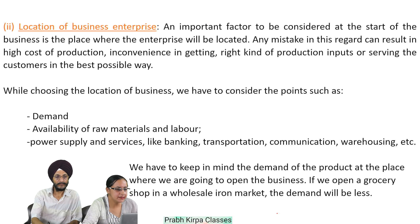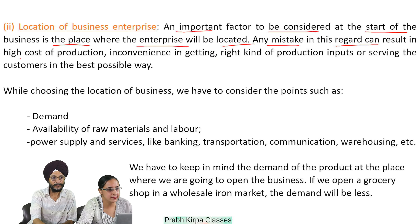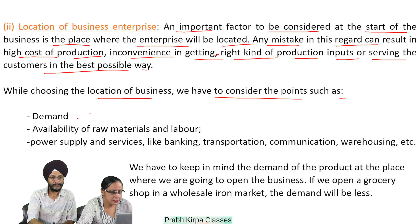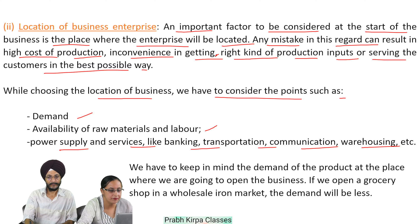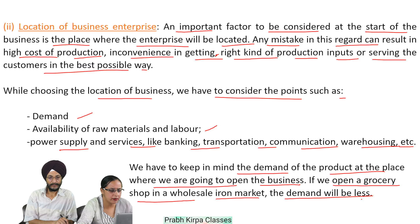Number 2, location of business enterprise: an important factor to be considered is the place where the enterprise will be located. Any mistake in this regard can result in high cost of production or inconvenience in getting production inputs or serving customers. While choosing the location of business, we have to consider demand, availability of raw materials and labor, power supply, and services like banking, transportation, communication, and warehousing. For example, if we open a grocery shop in a wholesale iron market, the demand will be less, resulting in less or no profits or even losses.